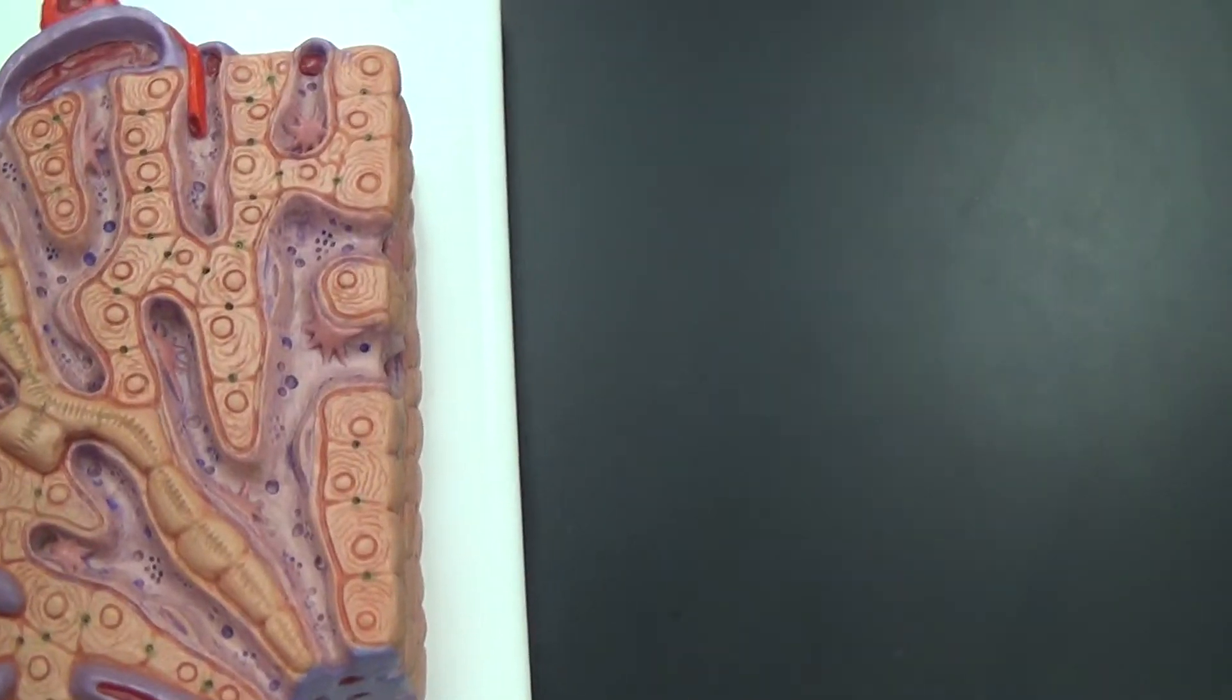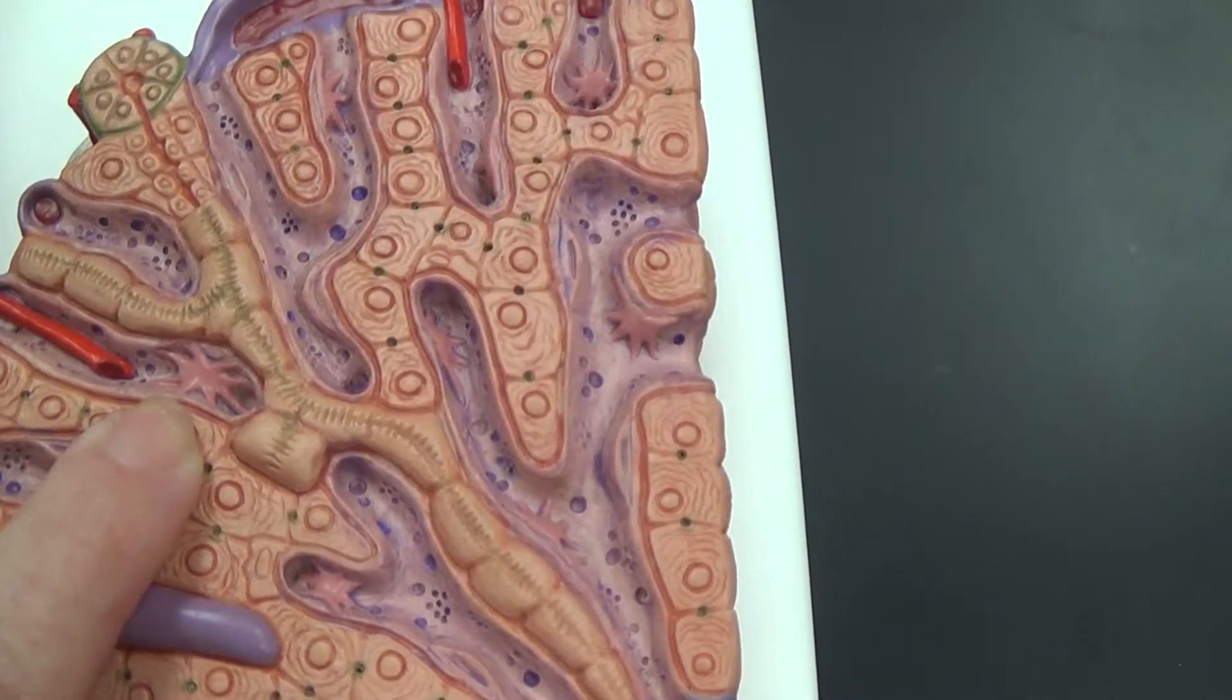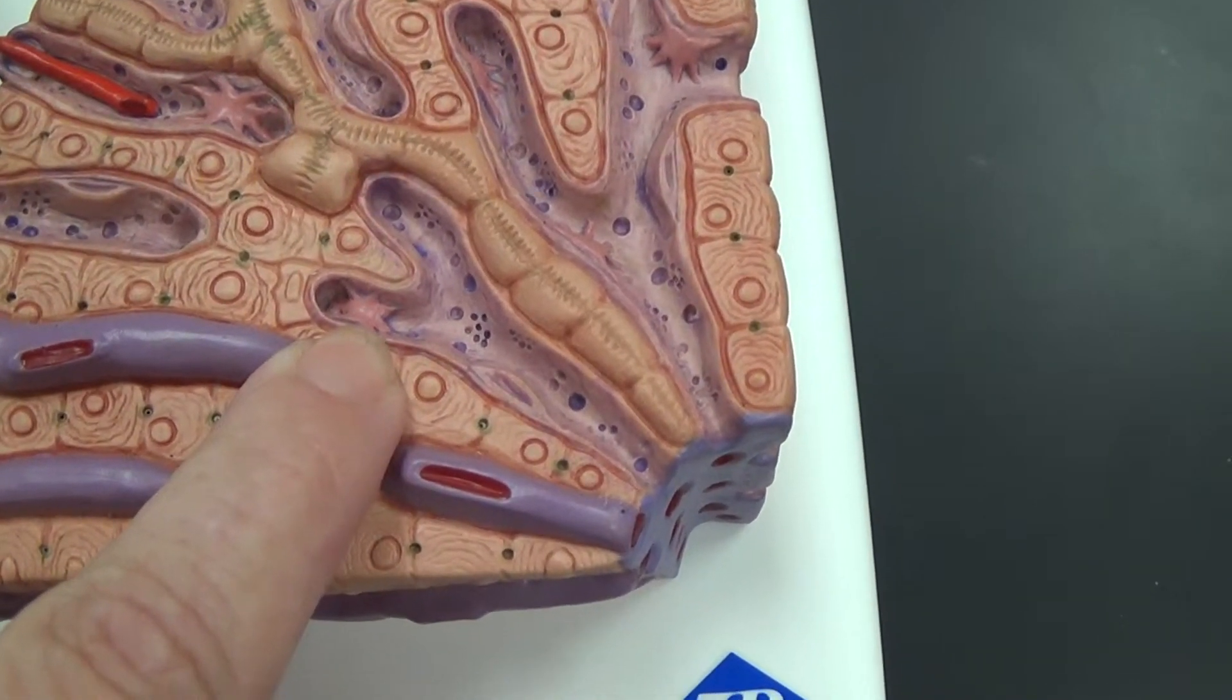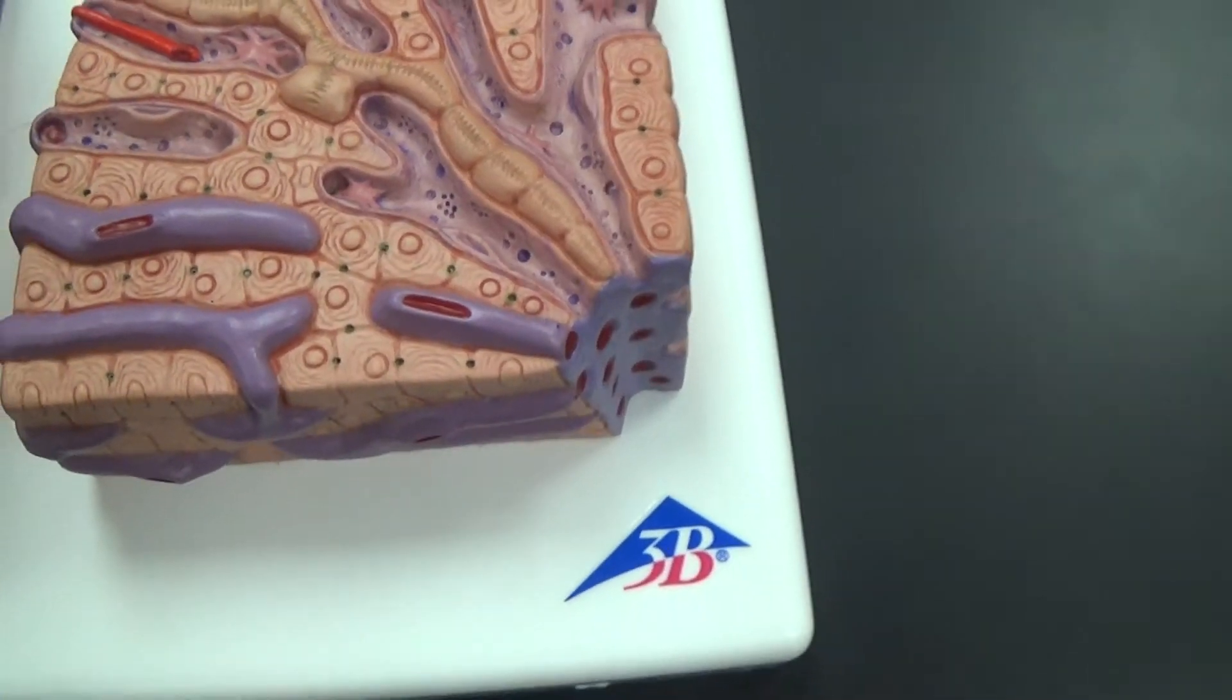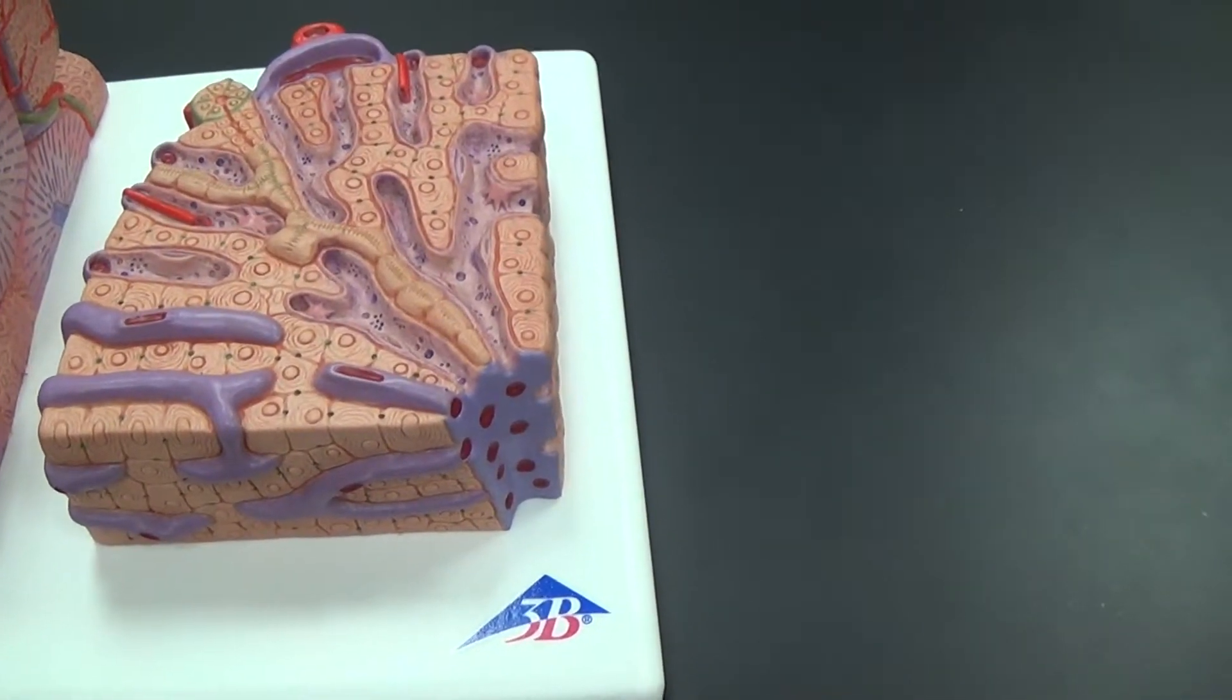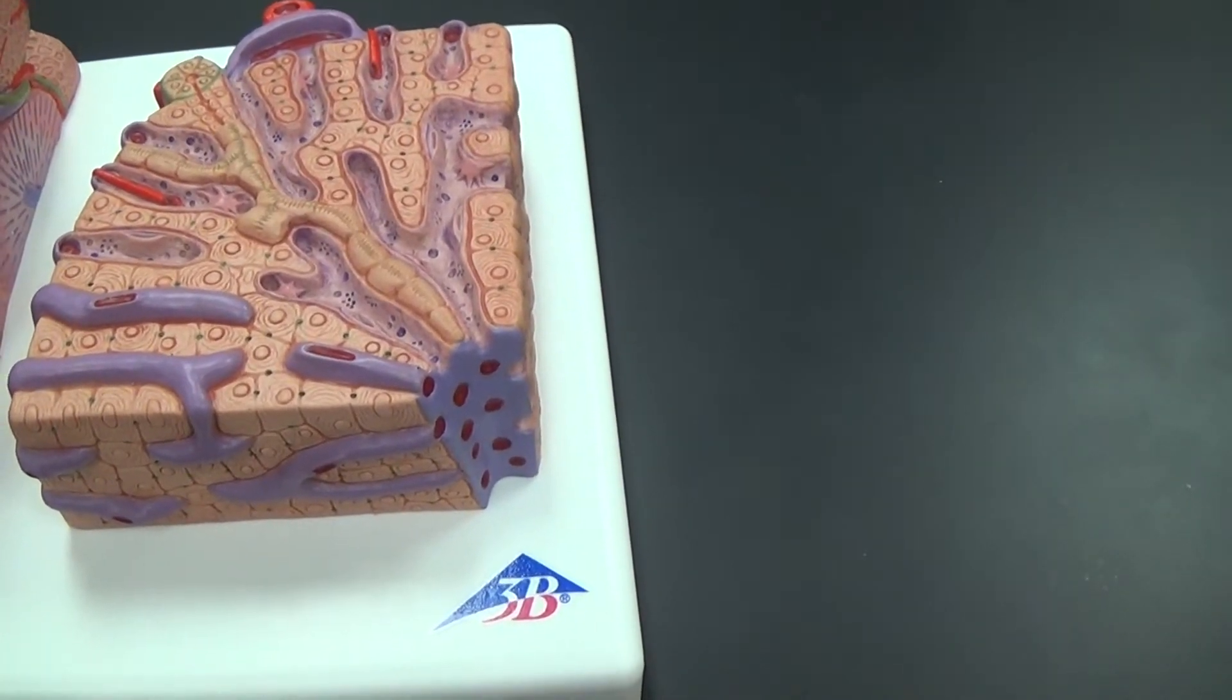There is this spider-like cell in here. One here. There's another one right there. Those are Kupfer cells. And they are designed to help filter out things that don't belong. So they are an immunity cell present in here.